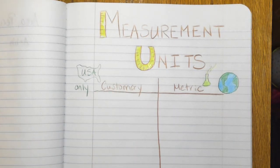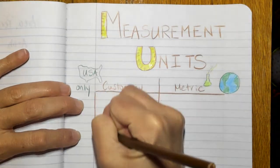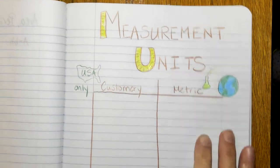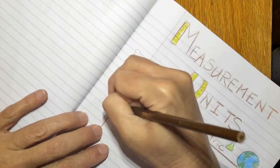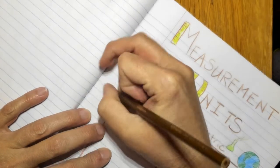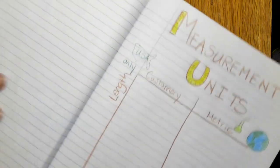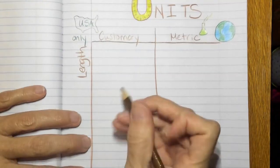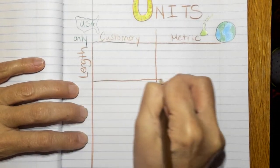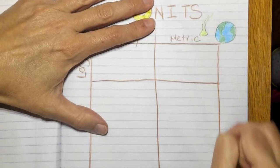So then over here on the side I'm going to draw a line down this way. We're going to talk first about units that measure length. Because there's customary units that measure length and there's metric units that measure length.